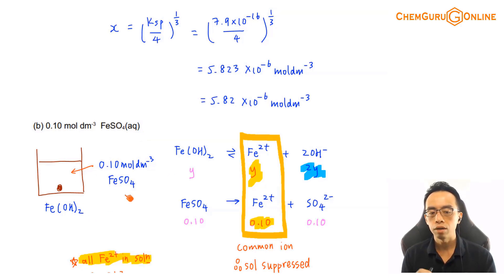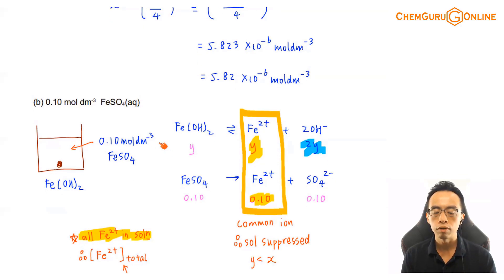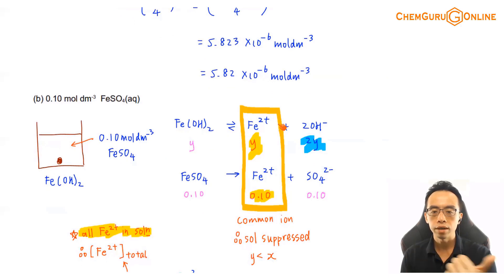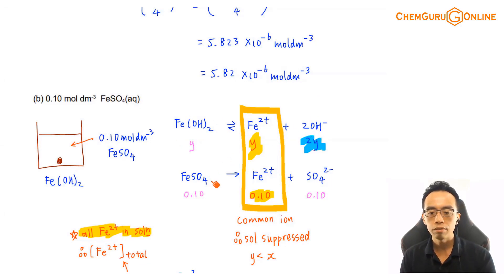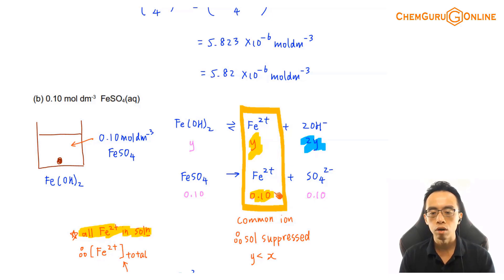The scenario is: I have iron(II) hydroxide with 0.1 mol per dm³ of iron sulfate. There are two dissociations, so let us write down both of them. The dissociation of iron(II) hydroxide is exactly the same as the previous one, but I changed the solubility to Y because it is expected to be a different value. If I let solubility be Y, the ratio is Y to Y to 2Y. Iron sulfate gives 1 Fe²⁺ and 1 SO₄²⁻; concentration is 0.1, so everything is 0.1. I have a common ion — two sources of Fe²⁺ — so I would expect solubility to be suppressed based on the common ion effect.